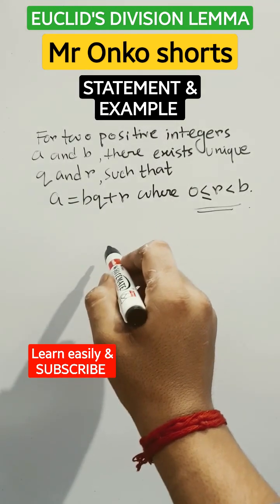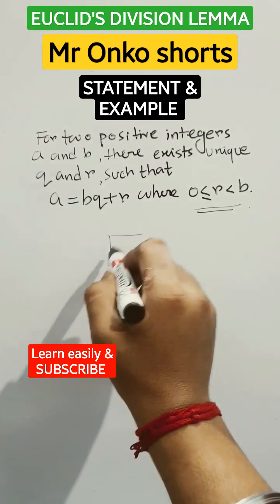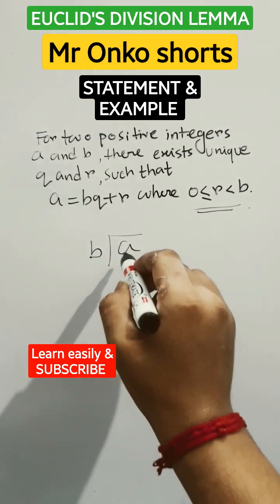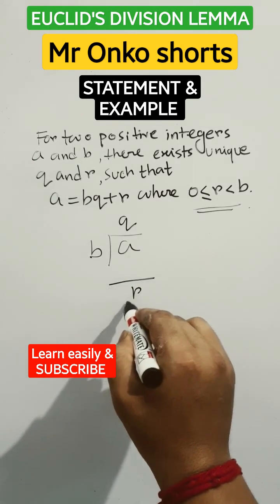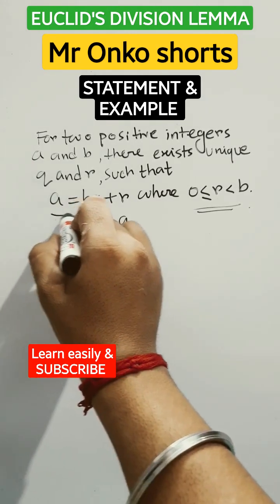Let me explain this lemma. If you divide integer A by integer B, both positive, then there will be quotient Q and remainder R. That's why we write this.